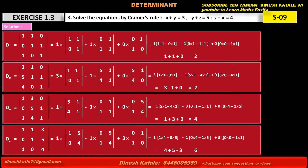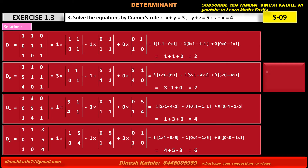So we got D equal to 2, Dx equal to 2, Dy equal to 4, and Dz equal to 6. By using these values of determinants, we find x is equal to Dx upon D, which is 2 upon 2, so x is equal to 1.